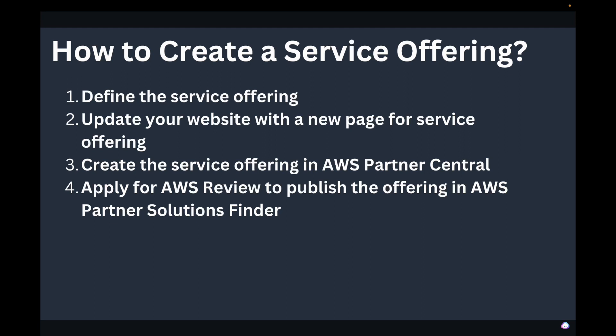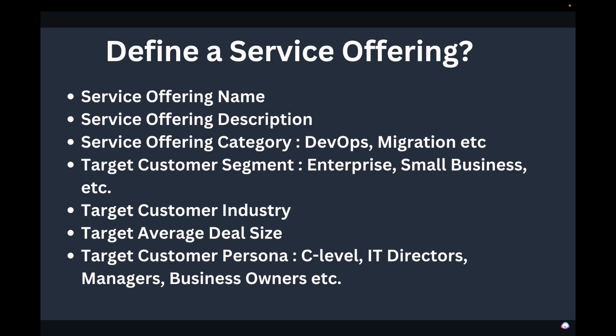How do you create a service offering? There are four steps. First, define the service offering. Second, update your website with a new page for the service offering. Third, create the service offering in AWS Partner Central. Fourth, apply for an AWS Foundational Technical Review — FTR — to publish the offering in the AWS Partner Solutions Finder. Once approved through FTR, it gets published on Partner Solutions Finder.